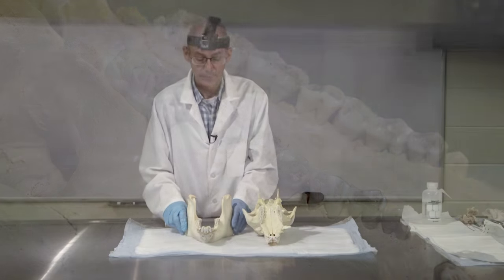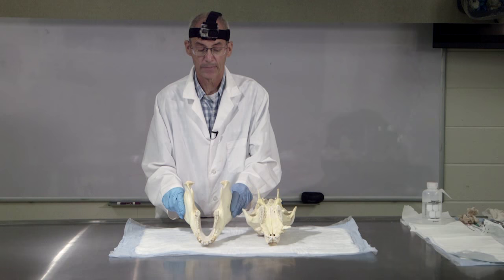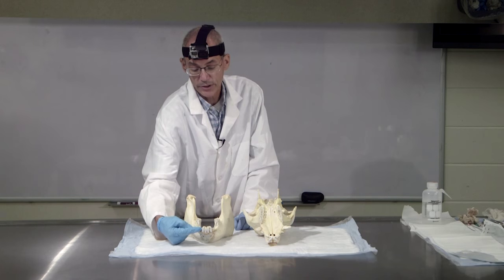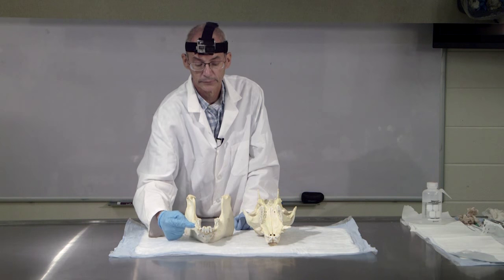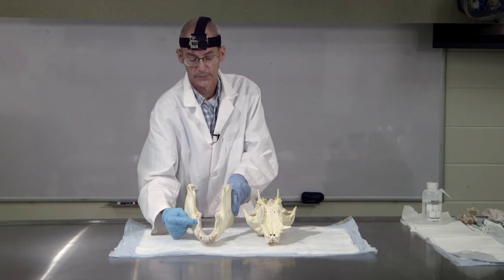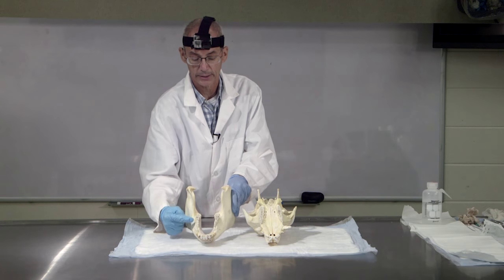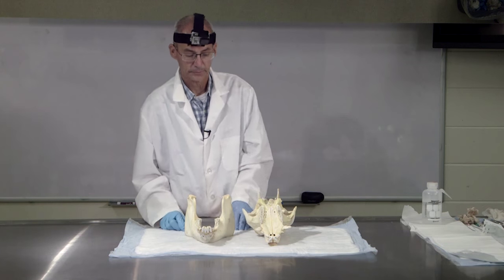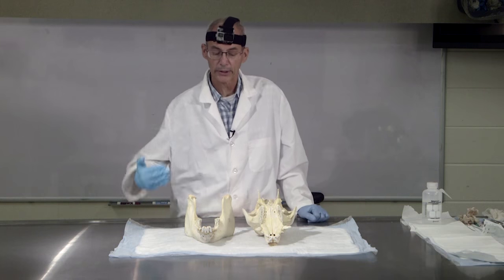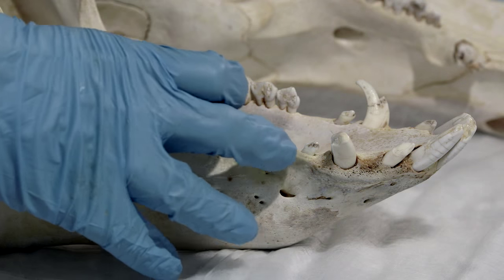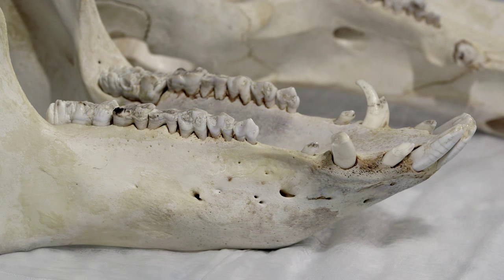If we look on the bottom jaw, we see essentially the same thing: three incisors, then a canine, then four premolars, and three molars. Just like the upper jaw, incisors and canines are primarily for food acquisition, and premolars and molars are primarily for food processing — in this case, grinding.